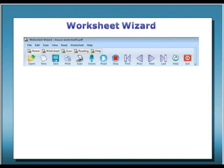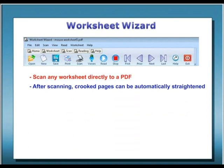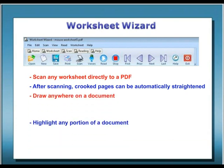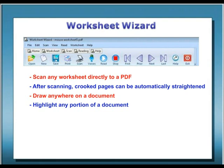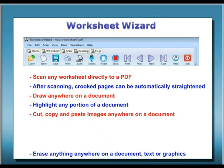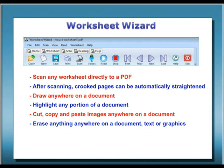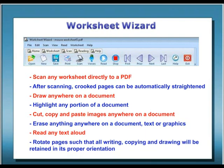The power of Worksheet Wizard is truly amazing. You can scan any worksheet directly to a PDF. After scanning, crooked pages can be automatically straightened. Draw anywhere on a document, highlight any portion, and cut, copy, and paste images anywhere on a document. Erase anything anywhere on a page — either text or graphics. You can read any text aloud, and you can rotate pages such that all writing, copying, and drawing will be retained in its proper orientation. With Worksheet Wizard, you truly have fully accessible worksheets like never before.